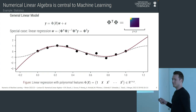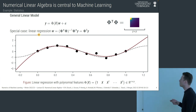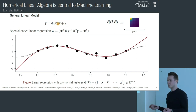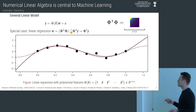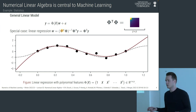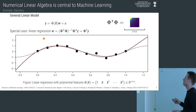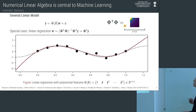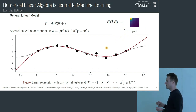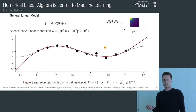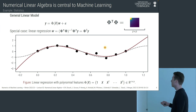A more practical example is the general linear model — a linear hypothesis class for regression. Attaching a square loss and solving the optimization problem in closed form, we also see a matrix inverse appearing. But it's not just any matrix: it's an outer product of two matrices, reasonably large depending on the number of features, and it's symmetric and positive definite. We'll talk a lot about exploiting structure to make NLA algorithms fast and reliable.